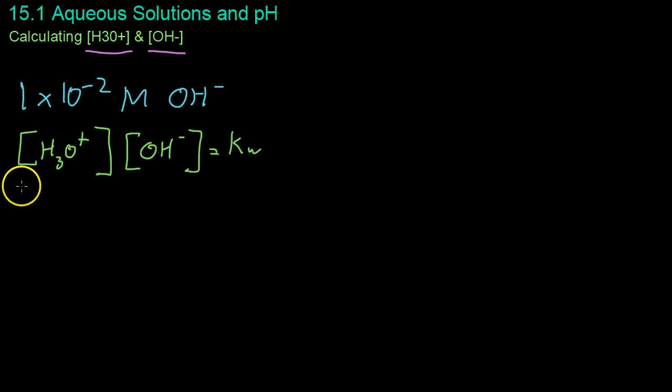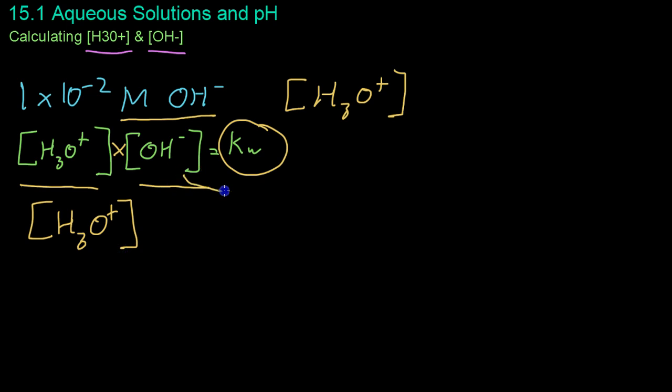Using what we know about the molarity of hydronium and hydroxide ions, that their product must always equal the ionization constant of water, we can use the molarity of the hydroxide to solve for the molarity of the hydronium. It's just a plug-and-chug sort of deal. You move this hydroxide into the denominator, and because we know the ionization constant at room temperature is 1 times 10 to the negative 14.